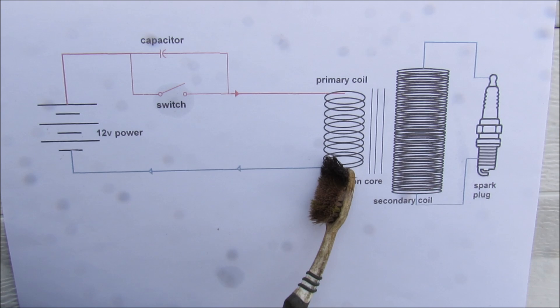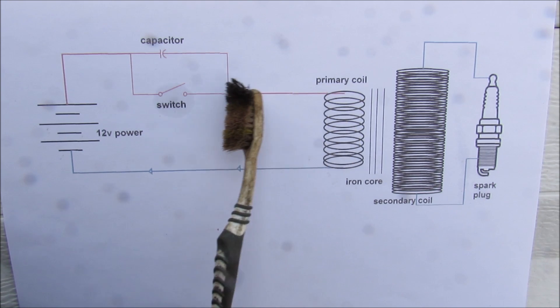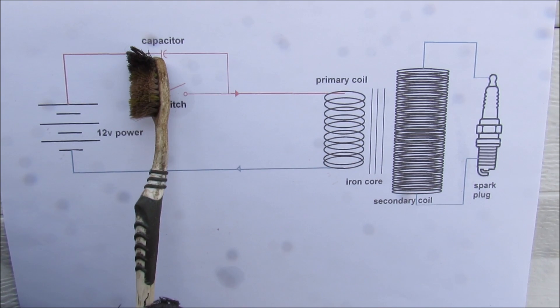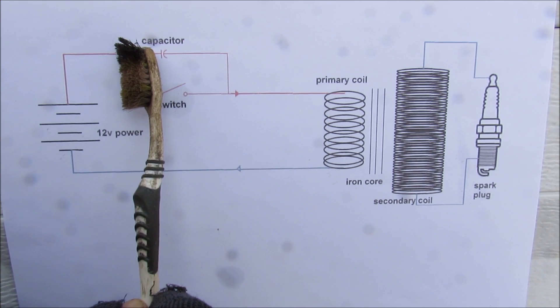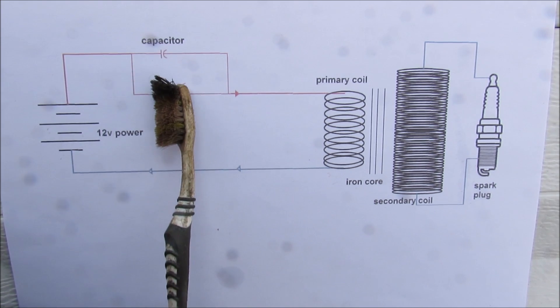Now on the primary side over here because there's not so many coils there is still a voltage spike. And that's why you have this capacitor here that will absorb some of that voltage spike instead of it actually sparking across the switch or burning out the ECU.